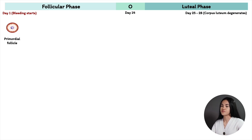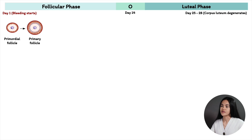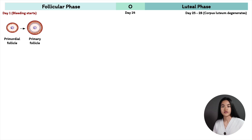From the primordial follicle it turns into a primary follicle, stimulated by FSH — follicle-stimulating hormone — secreted from the anterior pituitary gland. The granulosa cells change from a flat, squamous shape to a cuboidal shape. The zona pellucida also develops, which separates the oocyte from the inner layer of granulosa cells, though they're still able to communicate through gap junctions.